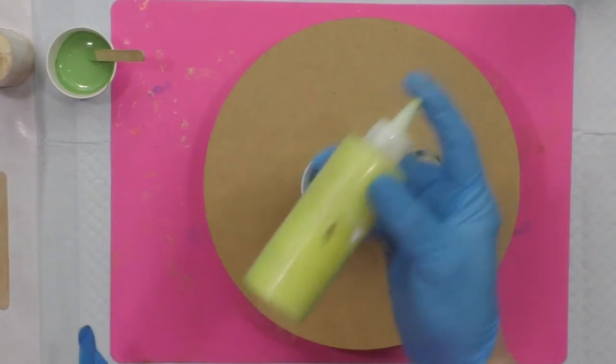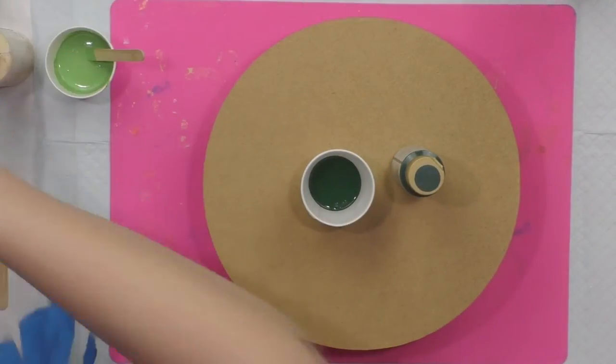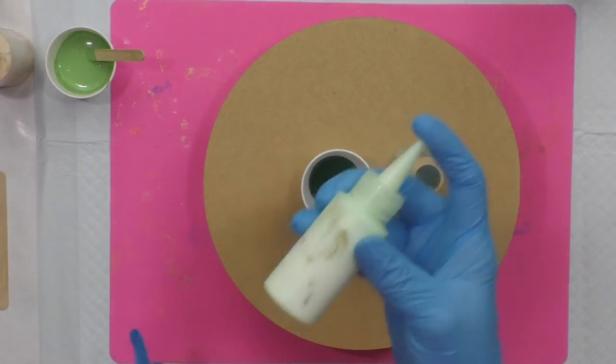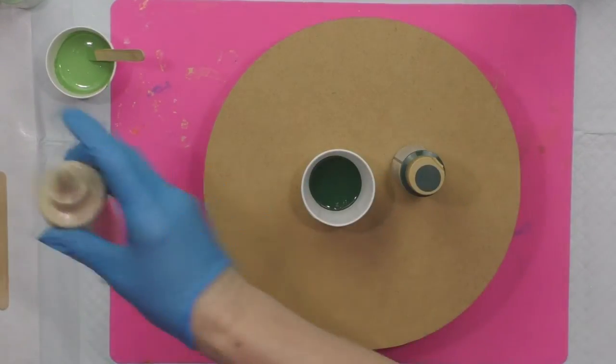A pistachio green that's really bright, a really really pale green, and a tan color which will be my neutral.